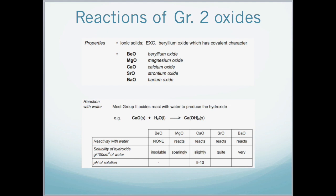All the other oxides of group 2 neutralize hydrochloric acid and nitric acid to form the corresponding chlorides and nitrates. For example, magnesium oxide reacting with hydrochloric acid will produce magnesium chloride and water.